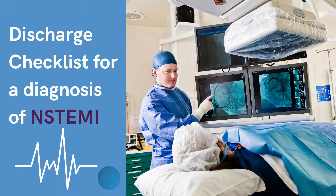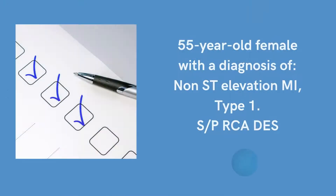These are important metrics to keep your chest pain accreditation with the American College of Cardiology and also to follow the guidelines for best practices. You're discharging a 55-year-old female with a diagnosis of NSTEMI type 1 status post-right coronary artery stent. What are the essentials to include in the discharge summary?